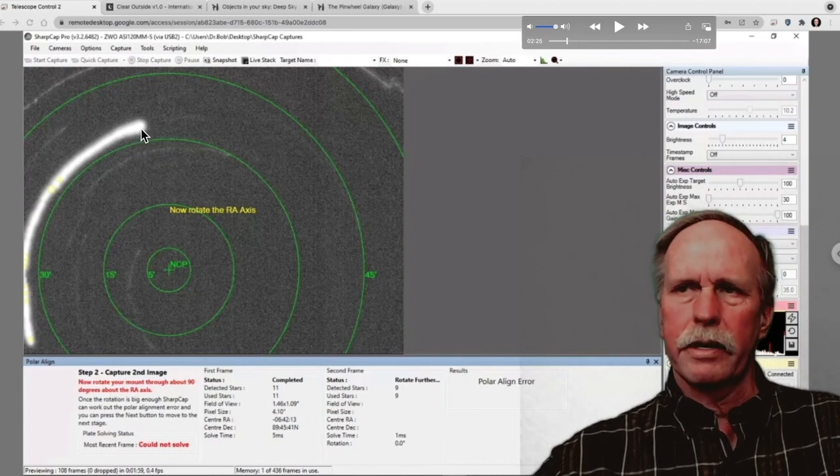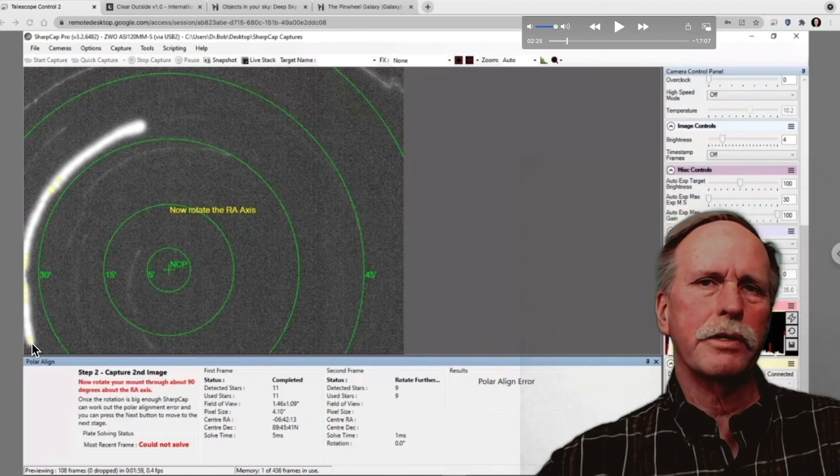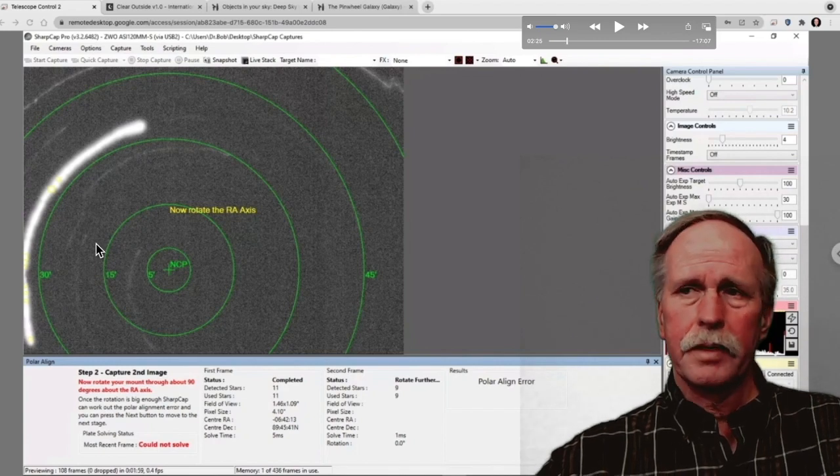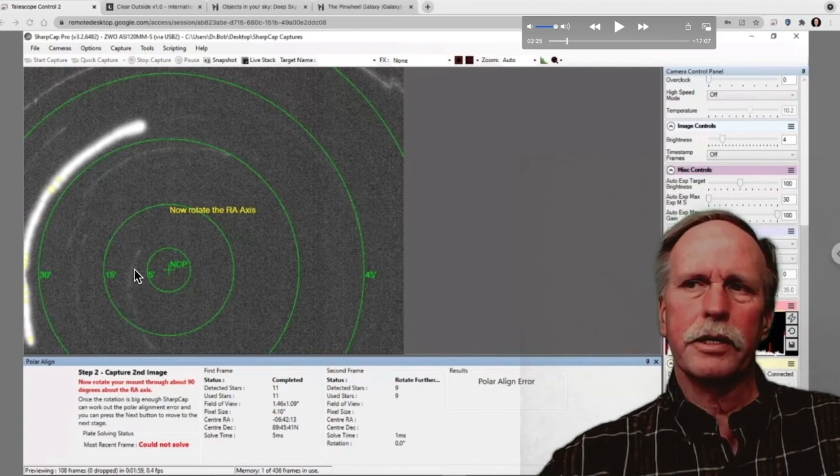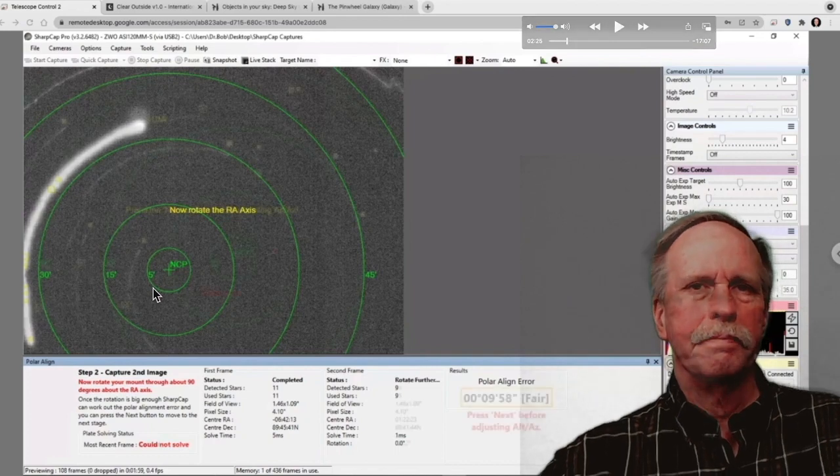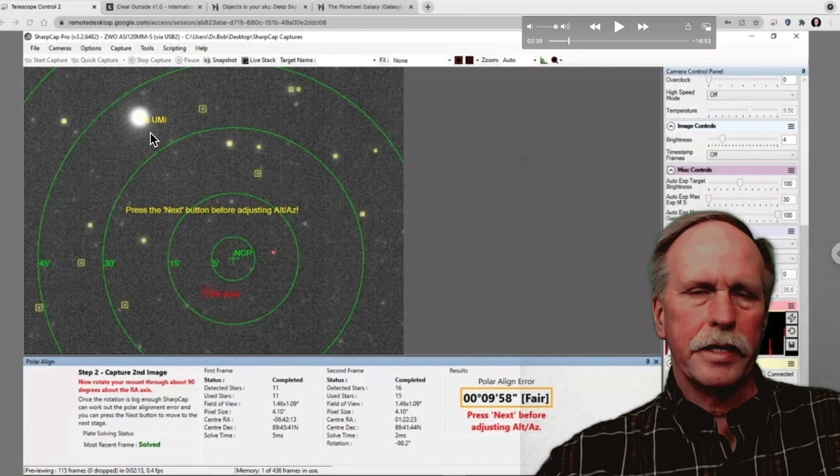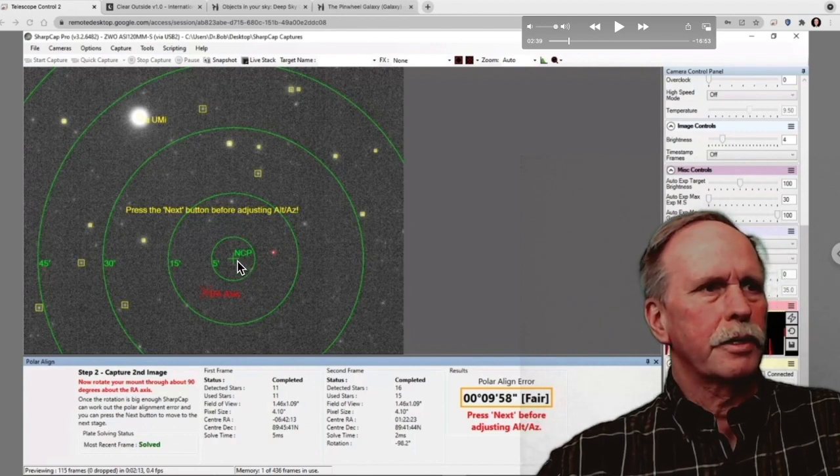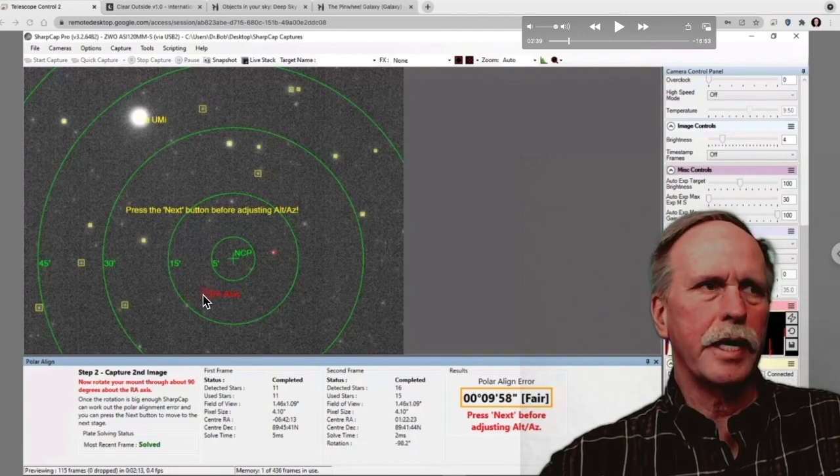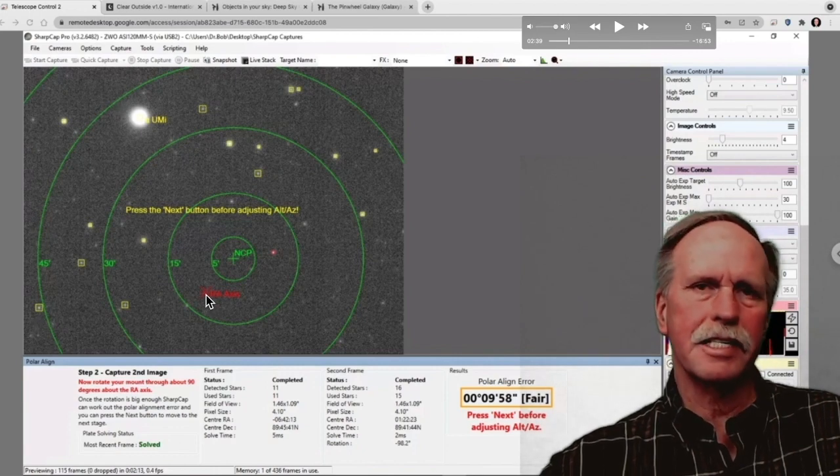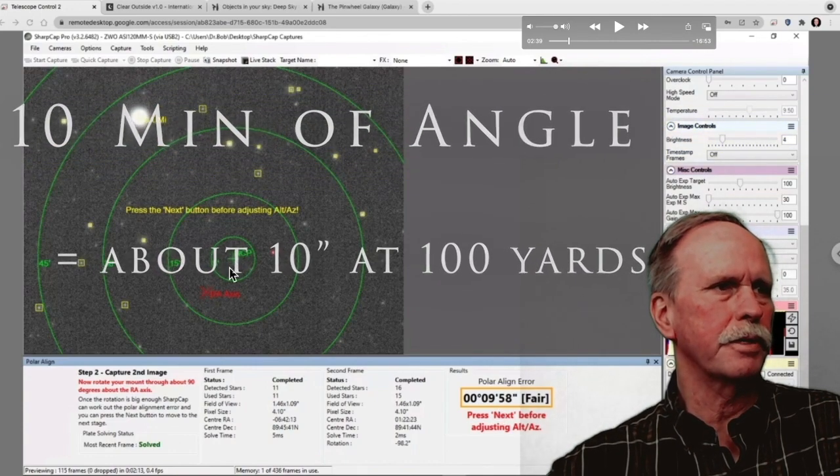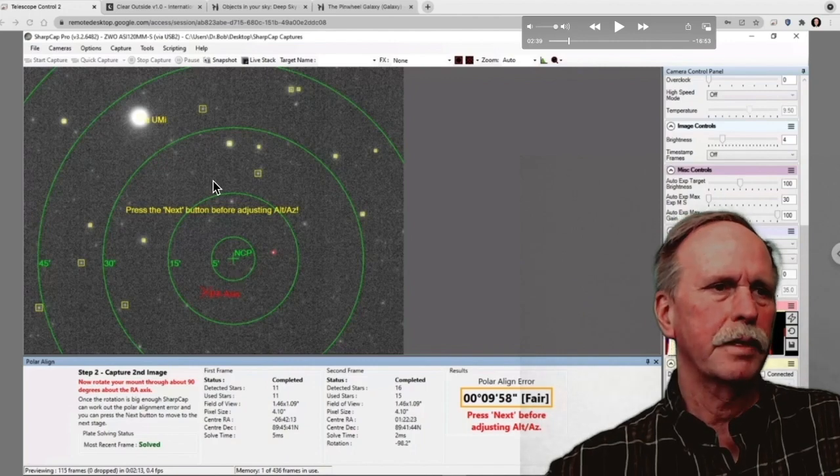And there we are. Notice that this star right here is Polaris. It started off down here but as we rotated the scope it formed an arc. Now that arc has got a radius and a center. Now what SharpCap is going to do is it's going to look at the radius of that arc and figure out that the center of that arc is right around here. The north celestial pole is here and our telescope mount is actually pointing at this red dot. That's the center of the arc. And it's telling me I'm about 10 minutes of angle off of the north celestial pole.